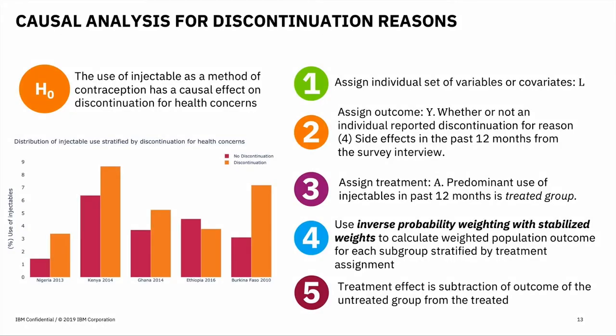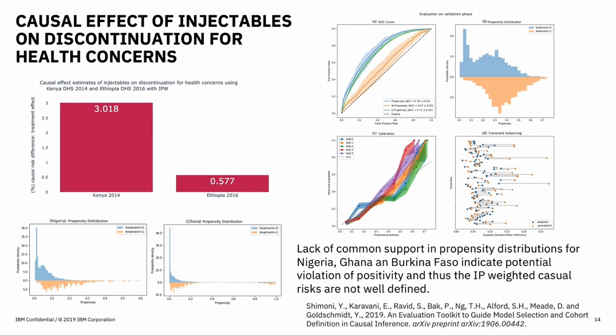Here we set up the causal hypothesis, define the outcomes based on discontinuation reasons, and the treatment based on whether injectables was used or not. Then we use inverse probability weighting with stabilized weights. For each country, we calculate the average treatment effect and show these as the percentage causal risk difference in the figure on the left. For all countries, the results suggest that the use of injectables indeed has a causal effect on discontinuation for health reasons, although to varying degrees. For example, we show that a woman in Kenya is five times more likely to discontinue injectables due to health concerns compared to a woman in Ethiopia. Such insights are very actionable by a policymaker.